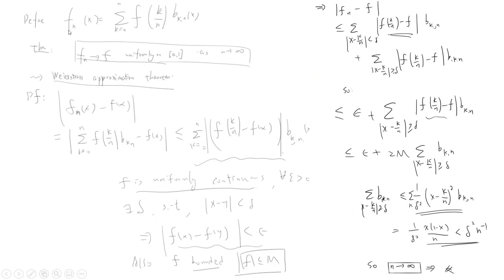Now let's prove the famous Stone-Weierstrass theorem. Given a continuous function f on the interval [0,1], there exists a polynomial function which can approximate f to arbitrary error. The key idea is to construct f_n as the sum from k=0 to n of f(k/n) times b_{k,n}(x). The theorem states that f_n approaches f uniformly on [0,1] as n goes to infinity — this is the Weierstrass approximation theorem.